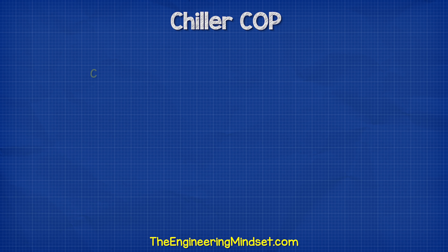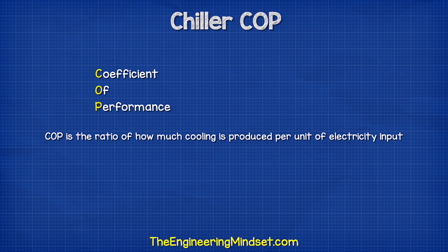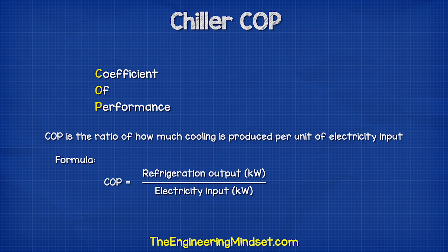Chiller efficiency is measured in COP, which stands for coefficient of performance. The COP is just the ratio of how much refrigeration you get per unit of electricity you put in. The formula is very simple: the COP is just the division of the kilowatts of refrigeration divided by the kilowatts of electricity.